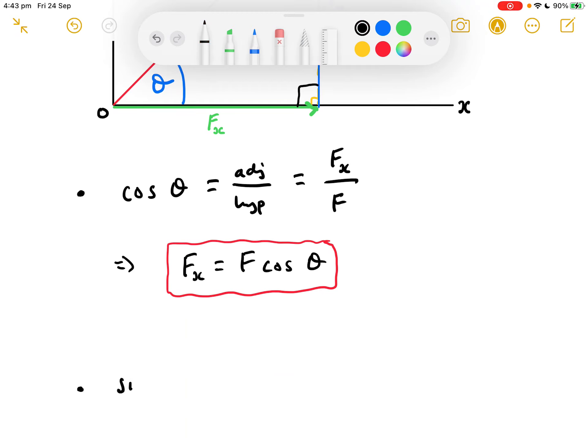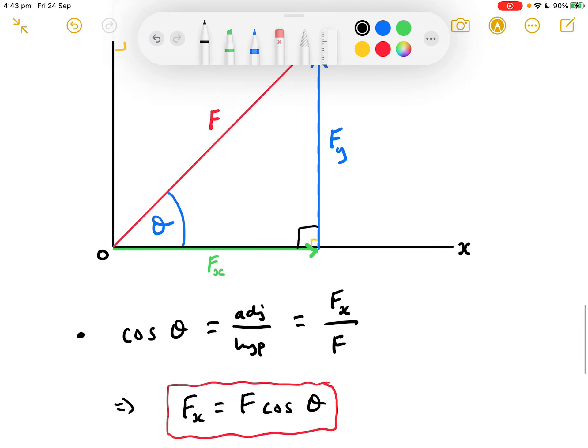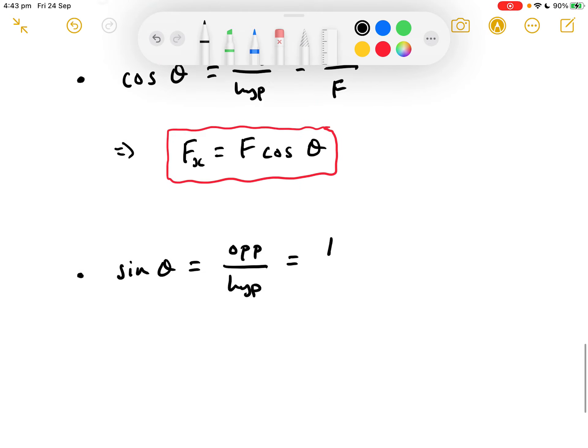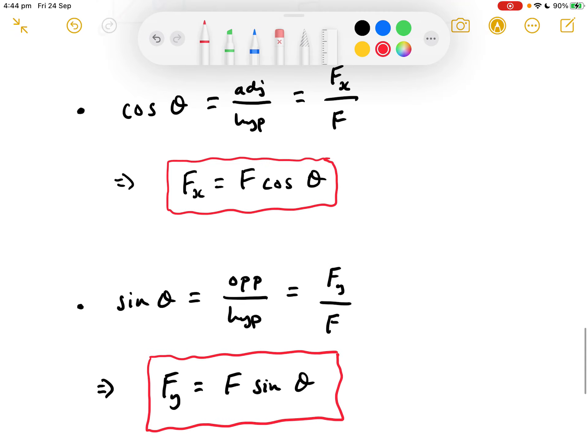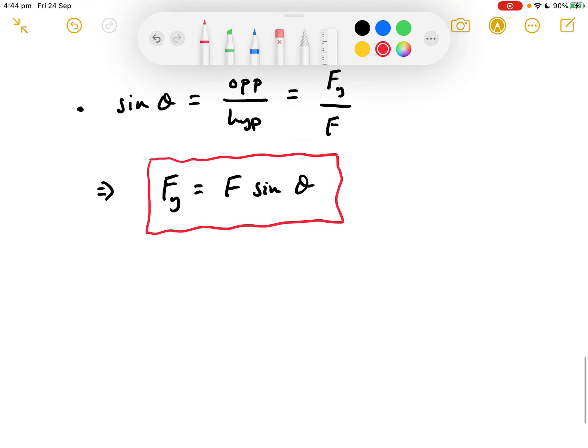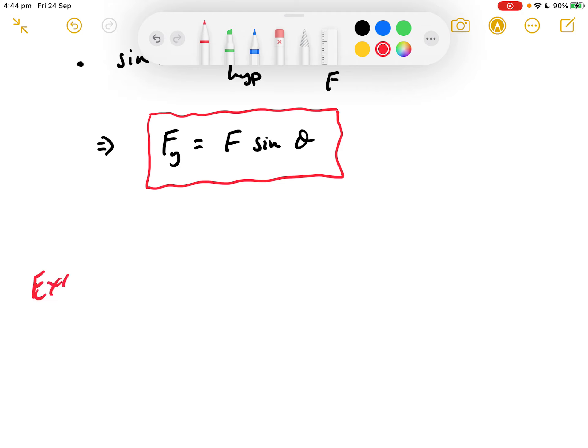What about Fy? I know already that I'm going to need sine theta for that. SOHCAHTOA sine theta is opposite over hypotenuse. Our opposite side here is Fy and the hypotenuse is F. So if I rearrange that for Fy, I get Fy is equal to F sin theta. That's how you resolve forces in the horizontal and the vertical. Let's do a simple example.